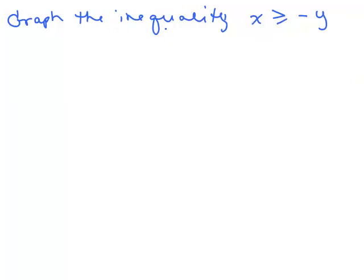We're going to graph the inequality x is greater than or equal to negative y. This one's a little bit tricky, so you have to be careful. First let's decide if we're going to be doing a solid line or a dotted line. So it says x is greater than or equal to negative y. It's got that equal part in it. So yes, x equals negative y is going to be part of the solution.